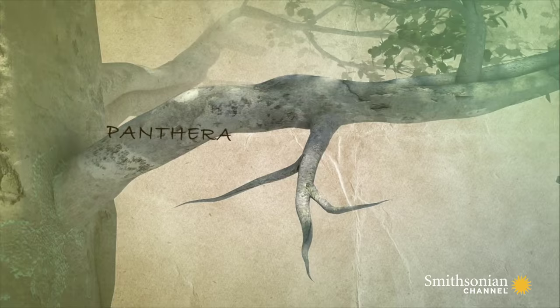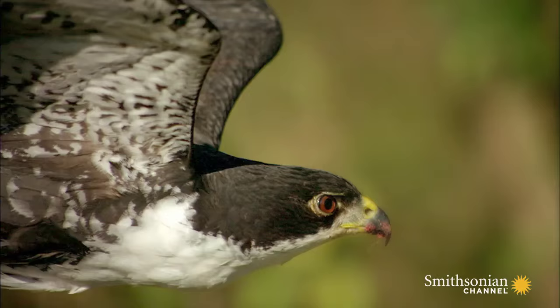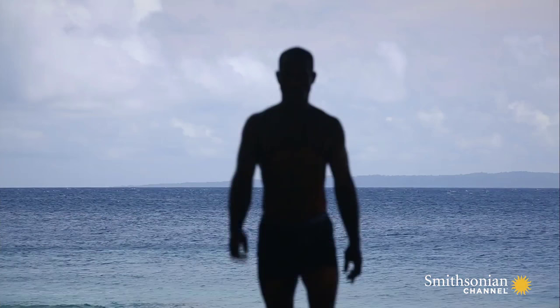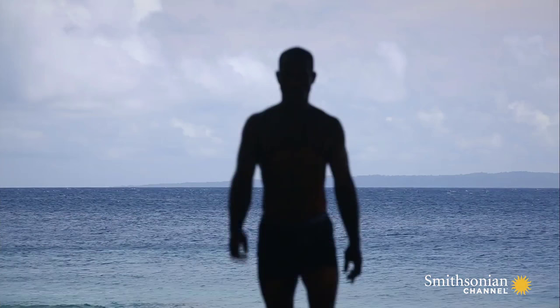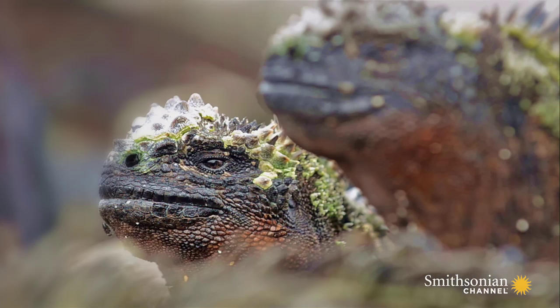Making sense of the earth's diversity means understanding what happens at these branching points. Today, scientists call this process speciation. Everywhere around us, we see the results of speciation, including the human species evolving from other primates. But exactly how this diversity of species came about remains a mystery.